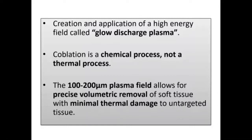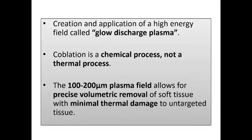Coblation involves creation of what we call a glow discharge plasma. This glow discharge plasma is what we all see when we use the coblation wand — you get that orange glow. The orange glow comes from ionized sodium ions. When electricity flows through a conducting medium like sodium chloride, the ions get dissociated.